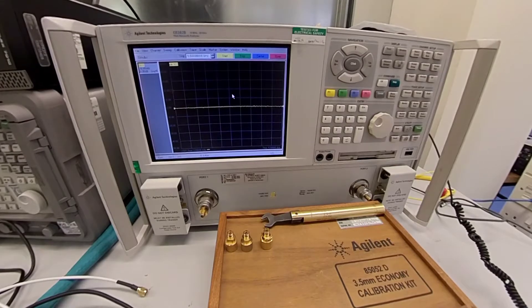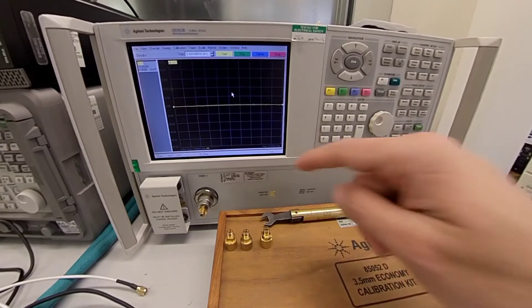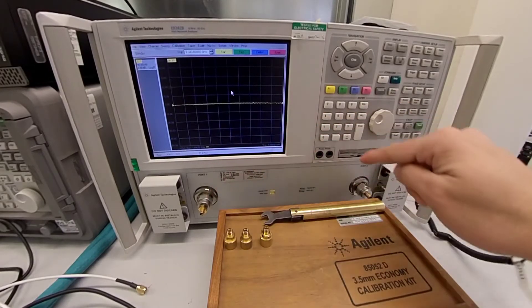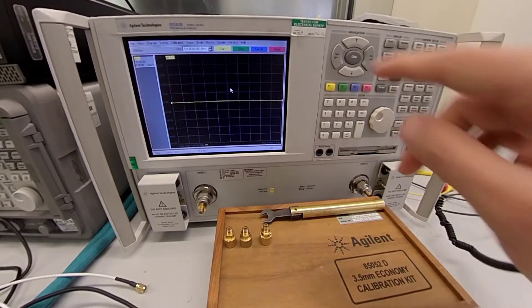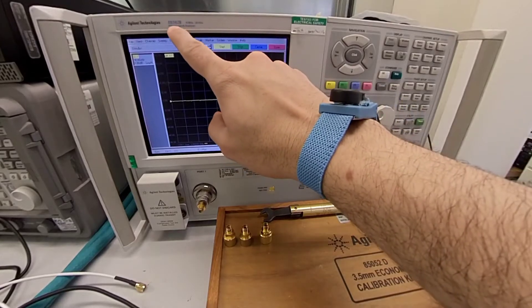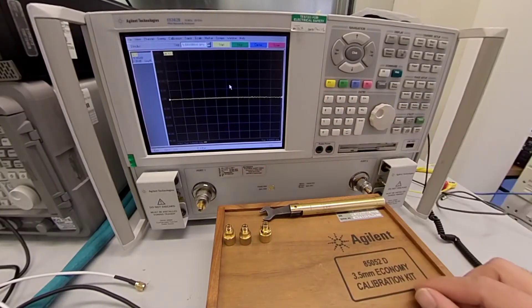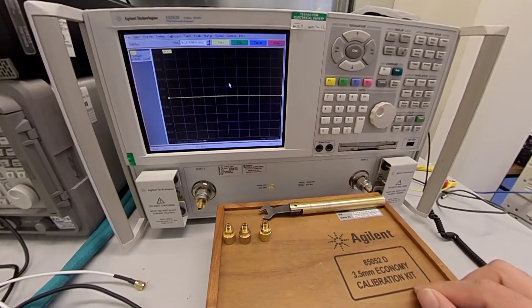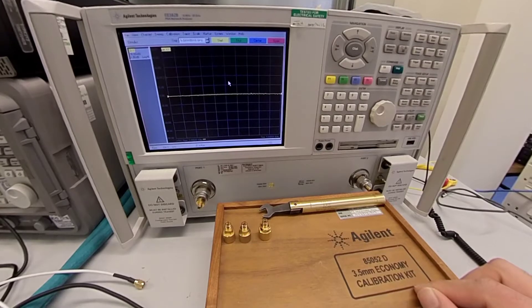You can see that the network analyzer has two ports, port number one and port number two. The model for the VNA is E8362B. The minimum frequency is 10 MHz while the maximum frequency is 20 GHz.